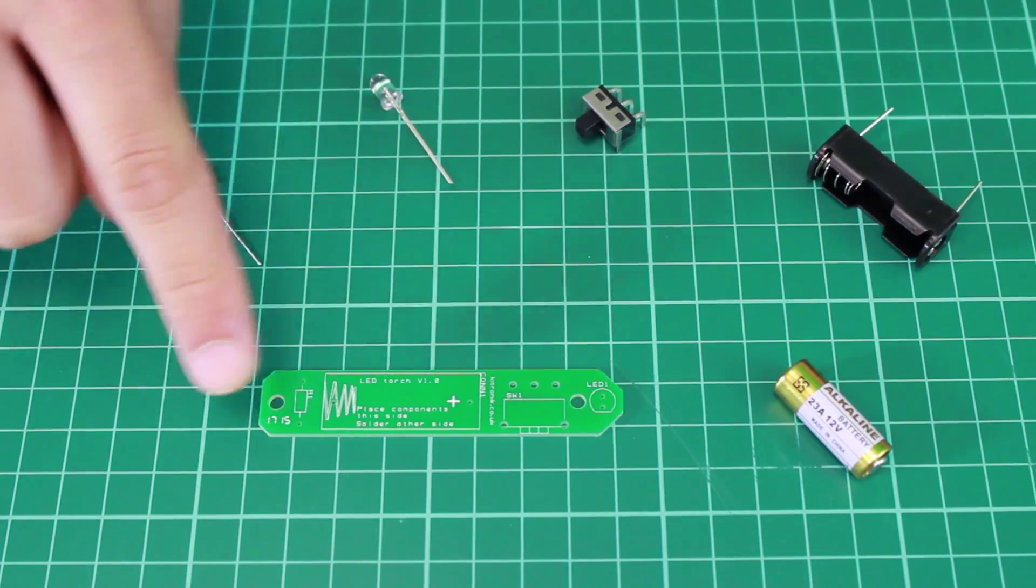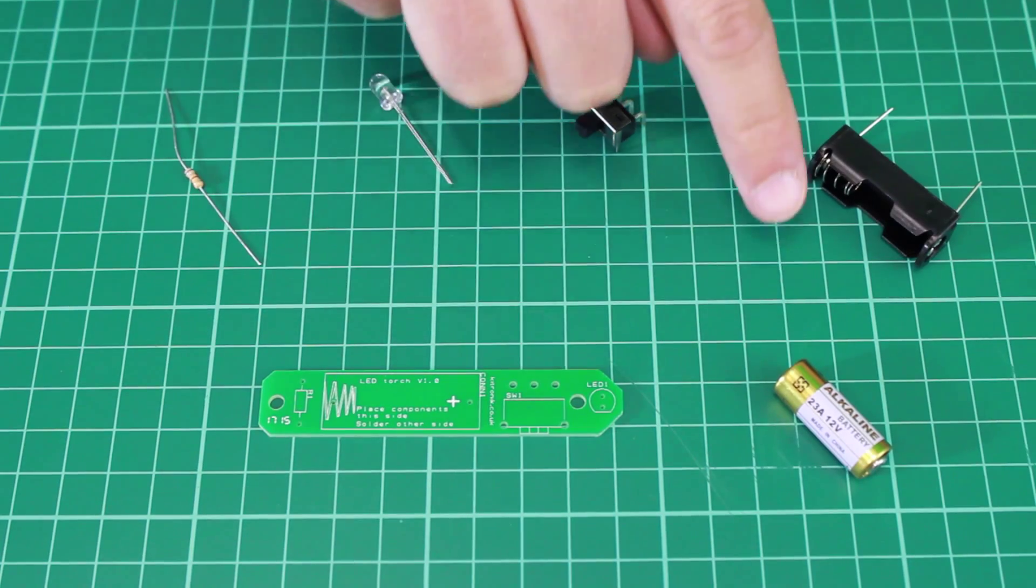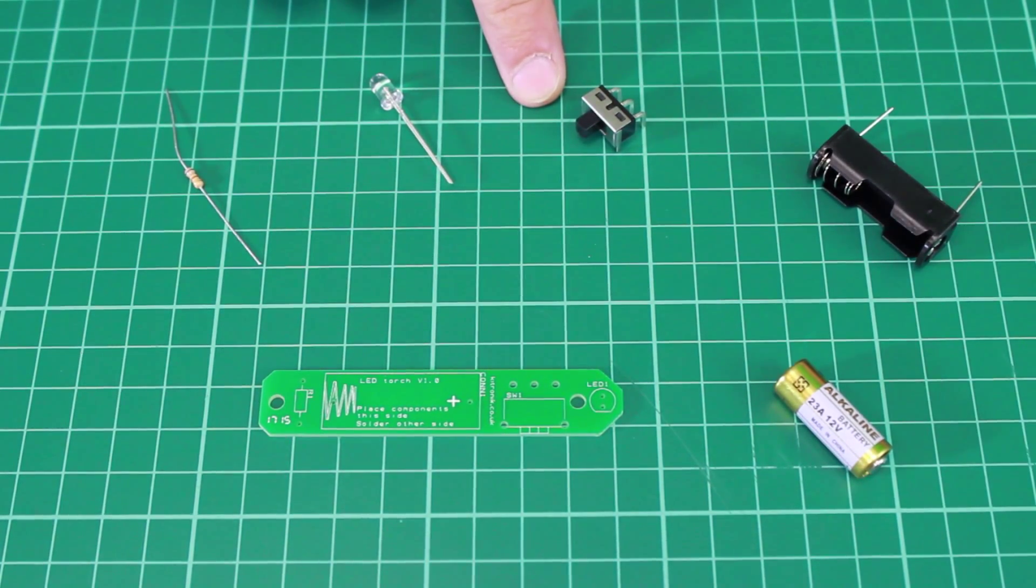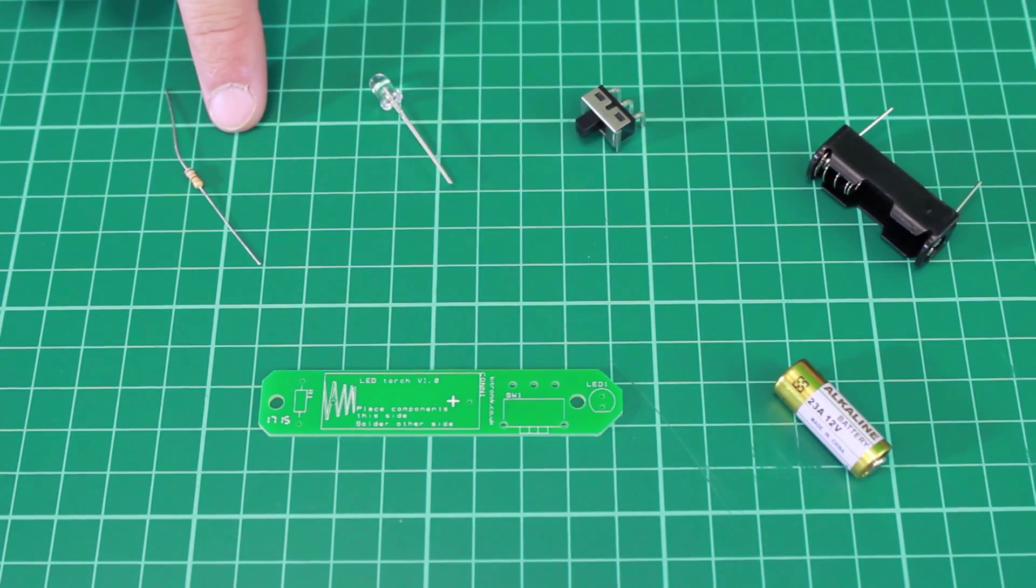We have a PCB, a battery and a matching battery holder, a power switch so that we can turn the torch on and off, the LED and a resistor.